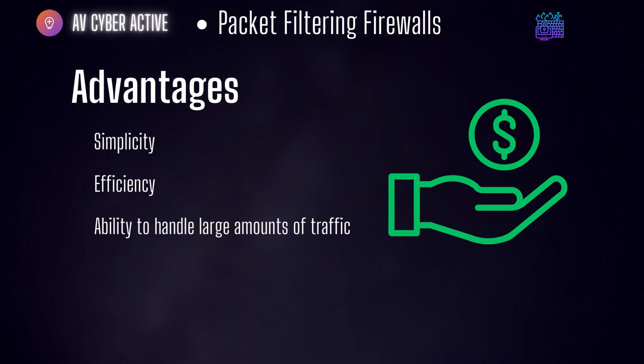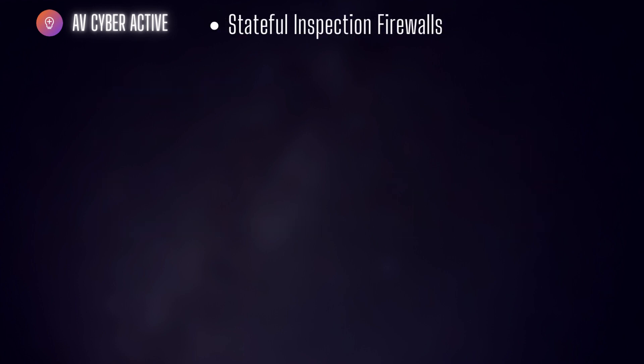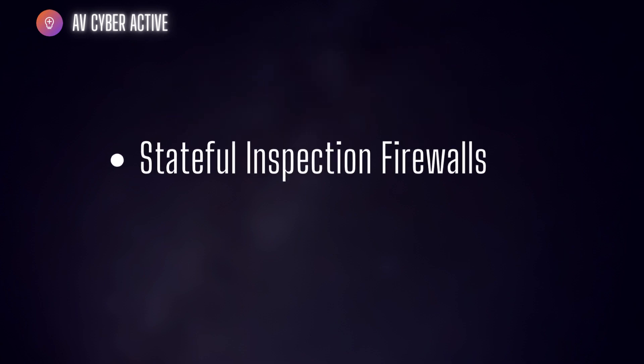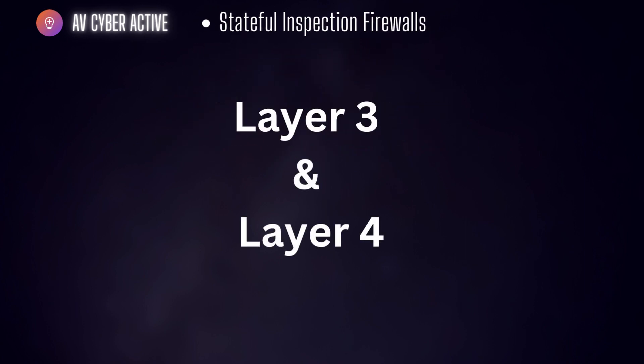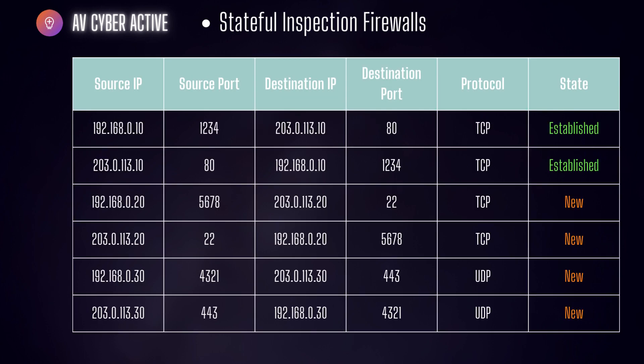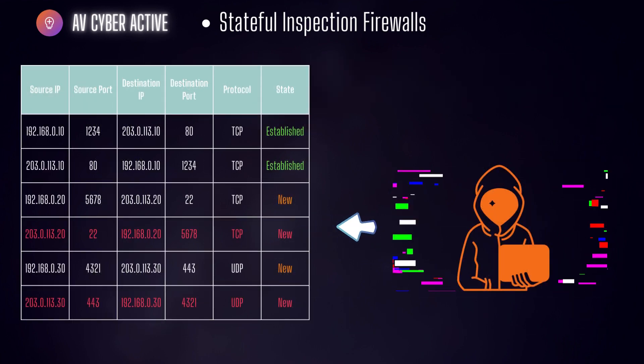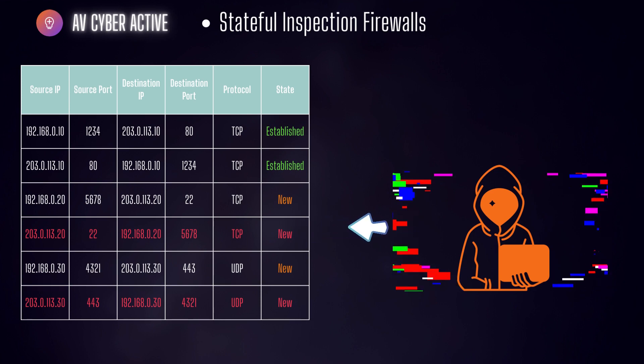Moving on to the next and more advanced type — stateful inspection firewalls. These firewalls operate at both the network and transport layers, that is, layer three and layer four of the OSI model. They not only examine individual packets but also track the state of network connections. Stateful inspection firewalls maintain information about the state of each connection, allowing them to make more intelligent decisions and filter malicious packets based on connection context.